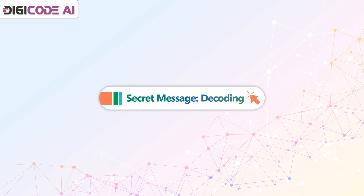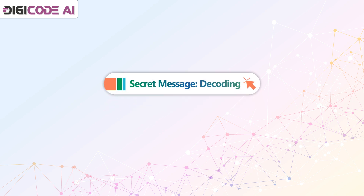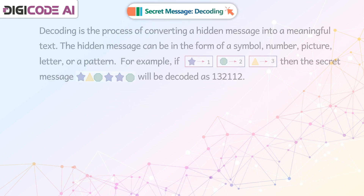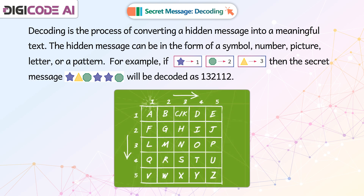Secret Message – Decoding. Decoding is the process of converting a hidden message into a meaningful text. The hidden message can be in the form of a symbol, number, picture, letter, or a pattern.